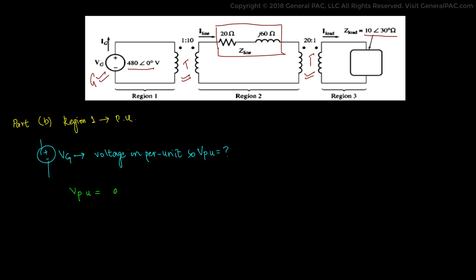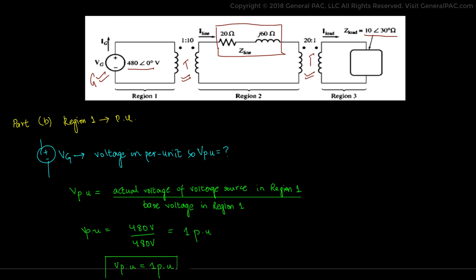And VPU or V per unit is equal to the actual voltage of voltage source in region 1 divided by the base voltage in region 1. Since region 1 is the generator side and the base voltage is equal to 480 volts, VPU simply equals 480 volts divided by 480 volts. That gives us 1 per unit. And that is for region 1.